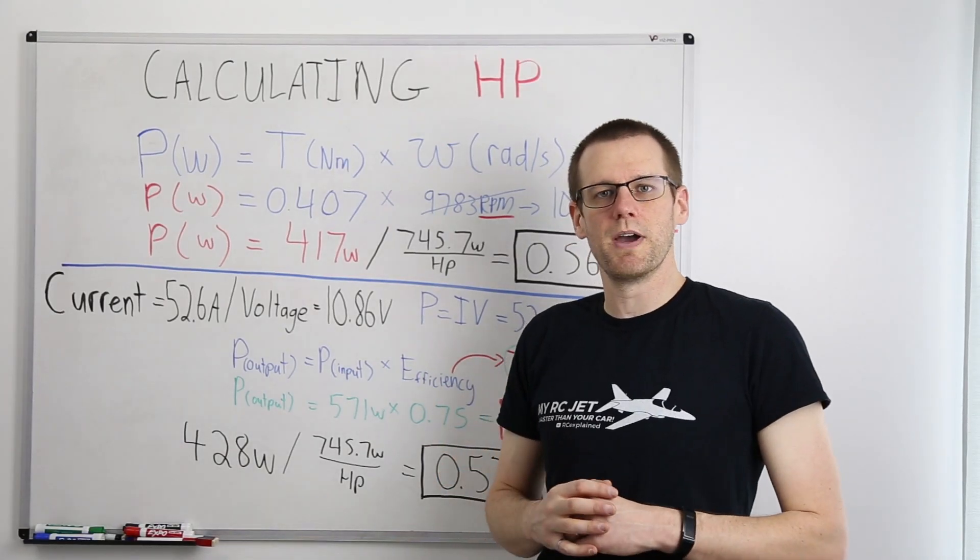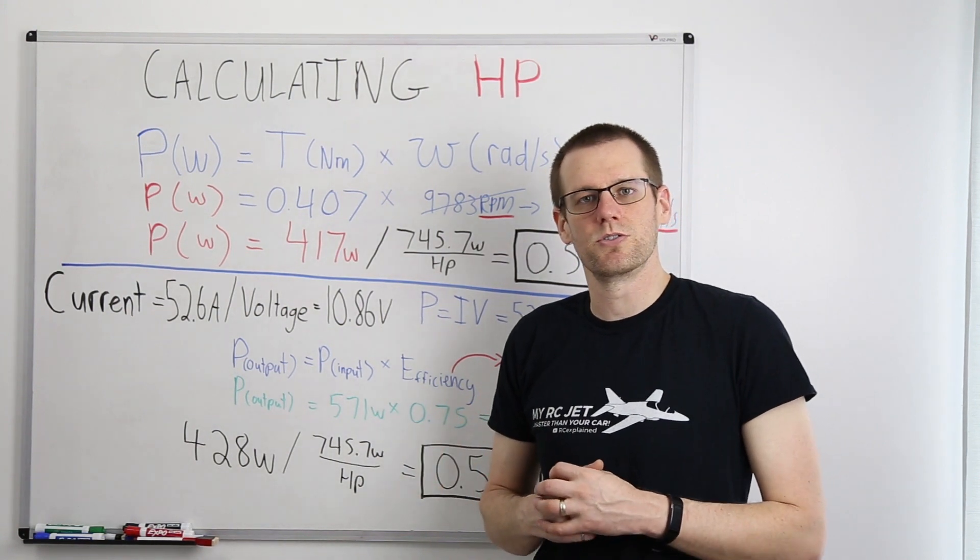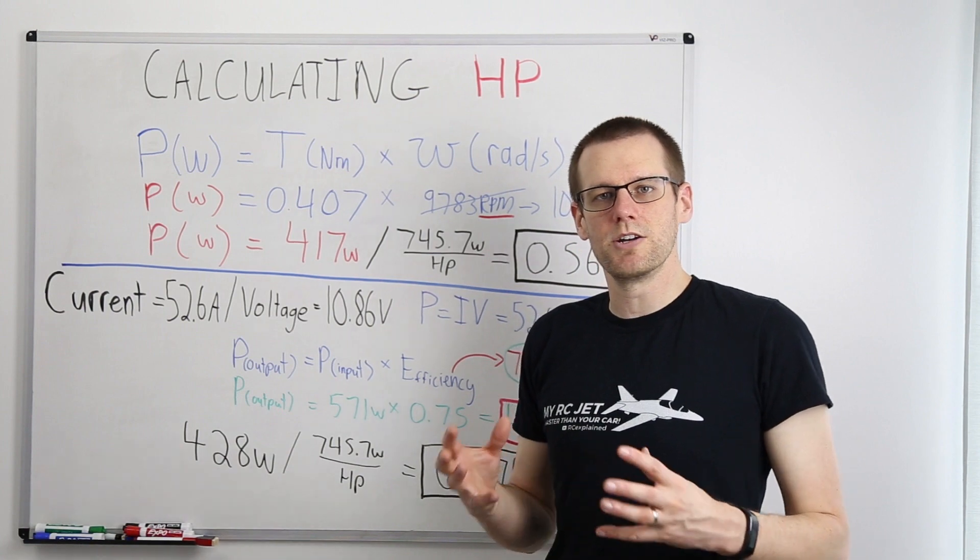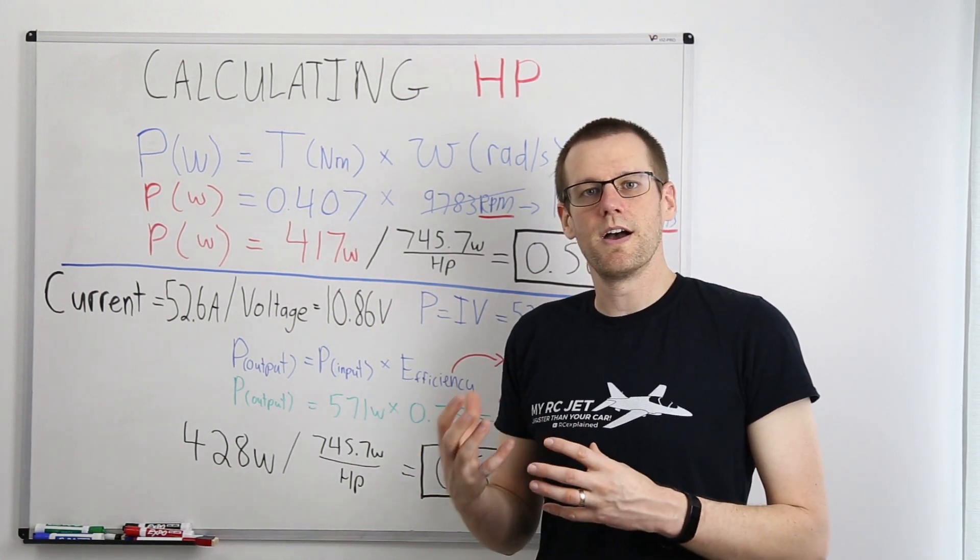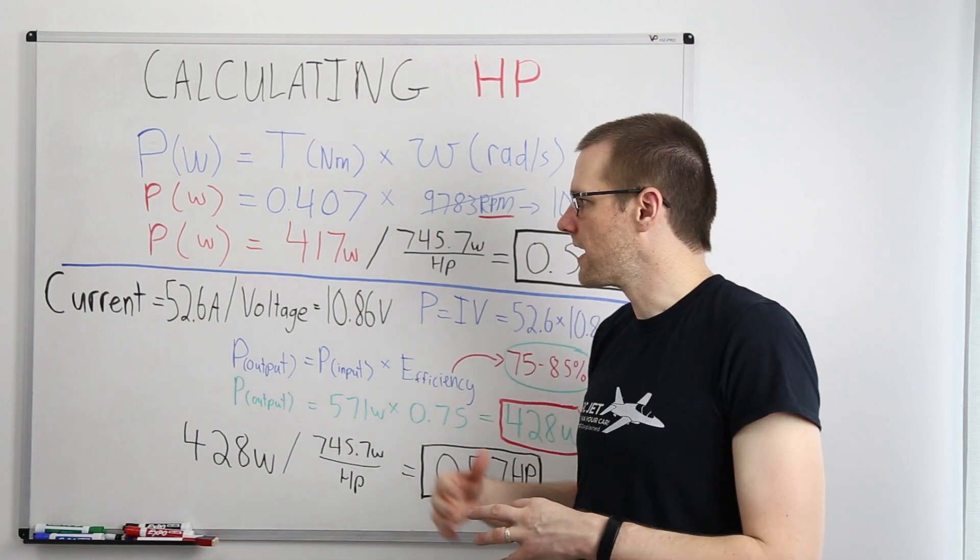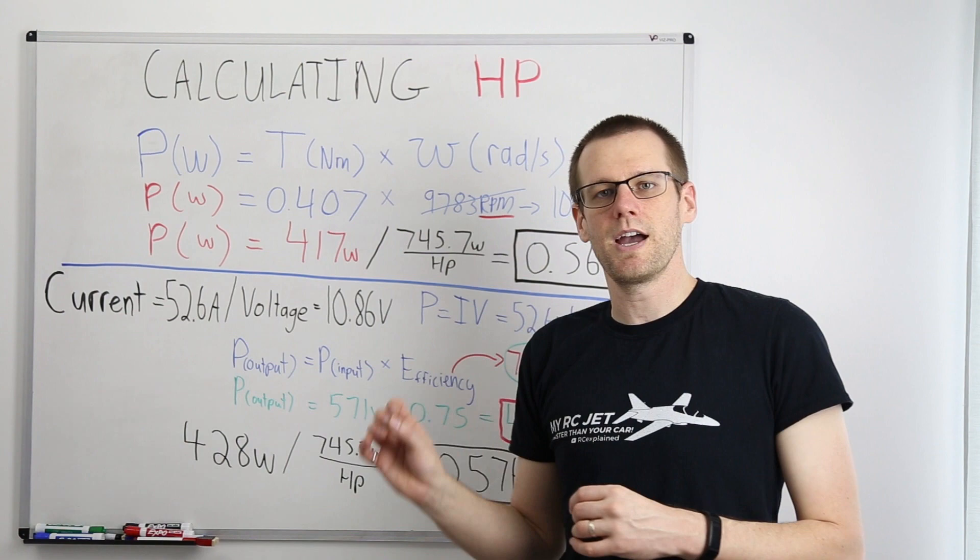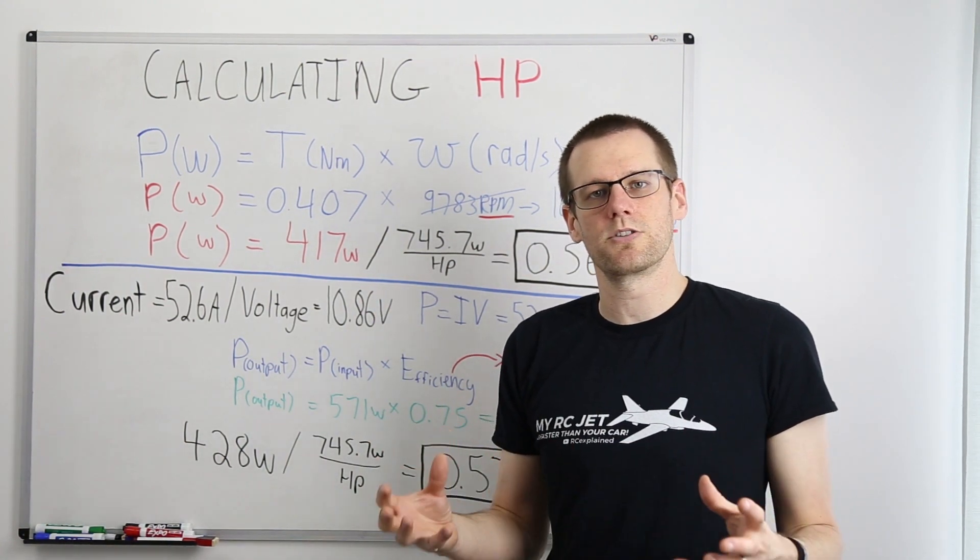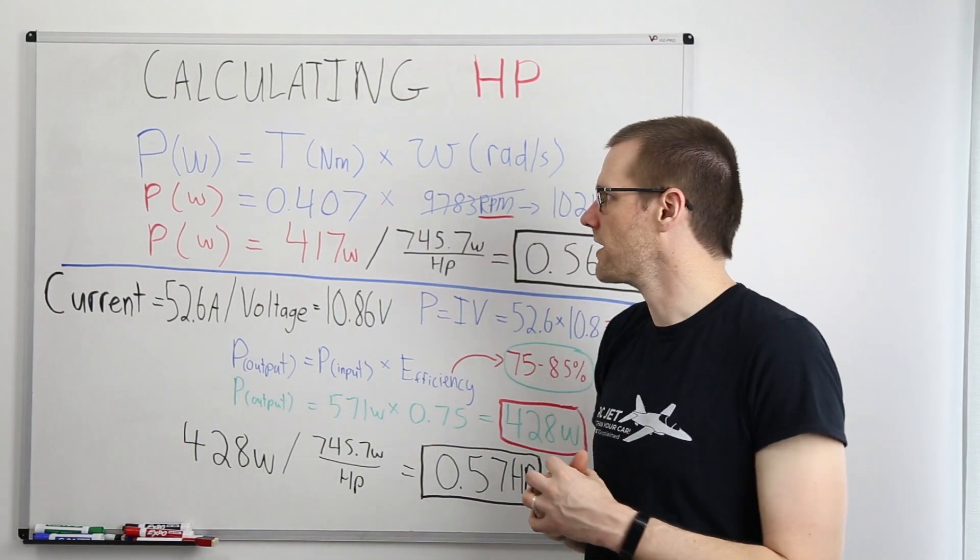We're going to use two different methods in order to actually determine the amount of horsepower output of our radio controlled systems. Our first method involves needing to actually measure the output torque. Now 99% of you out there are not going to be able to measure the torque and we'll have to use our second method. That's okay because the second method, you'll see how the two compare, can get us close to the actual result as well. So let's take a look at how we do this.